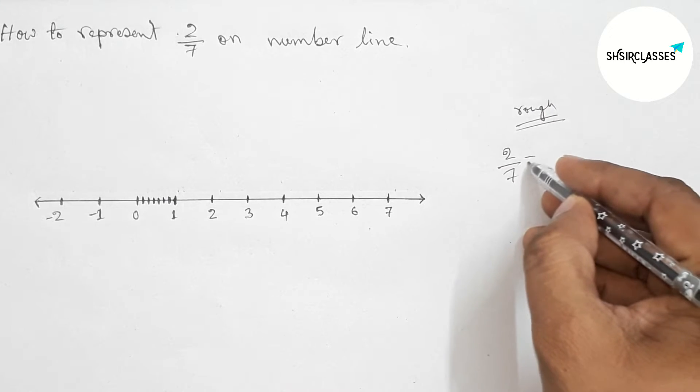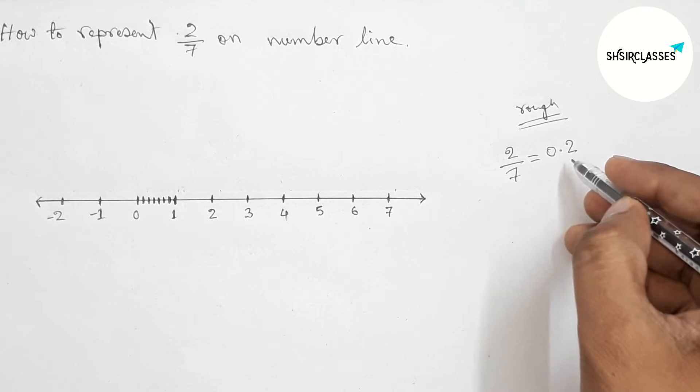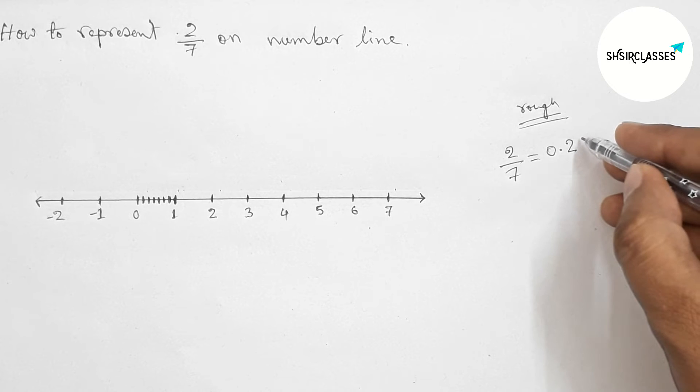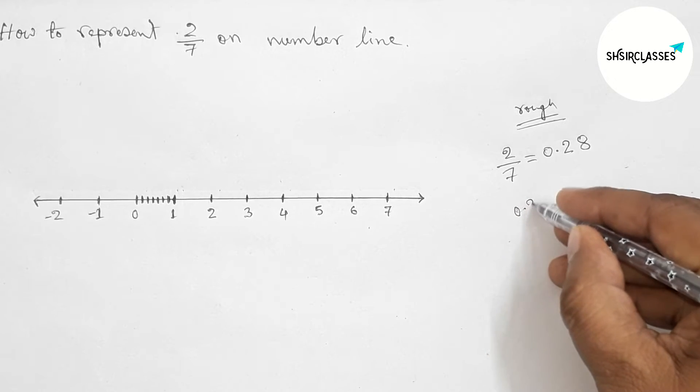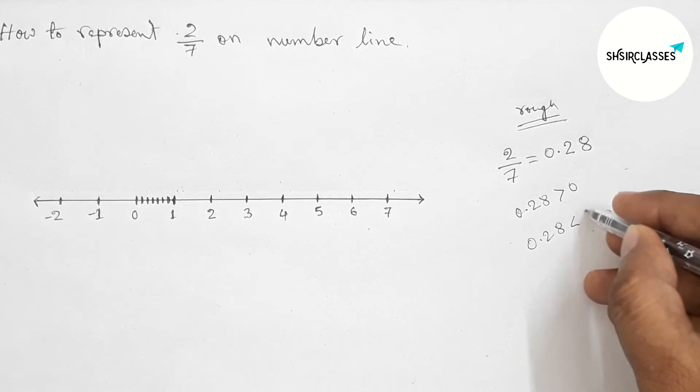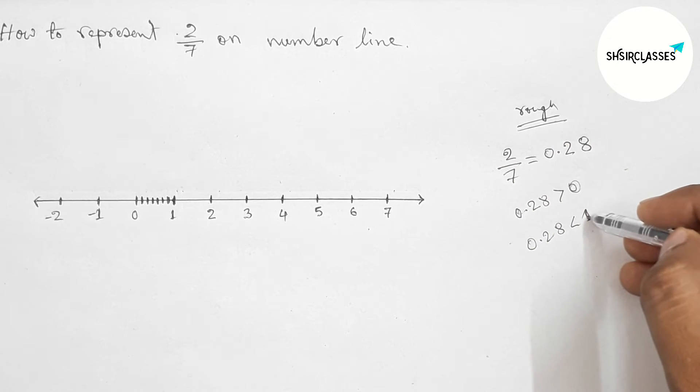Now roughly discussing some important calculation. Here 2 by 7, this is 0.2 continuous. So 0.2 is obviously greater than 0, and 0.28 is less than 1. Between 0 and 1 we can represent 2 by 7.